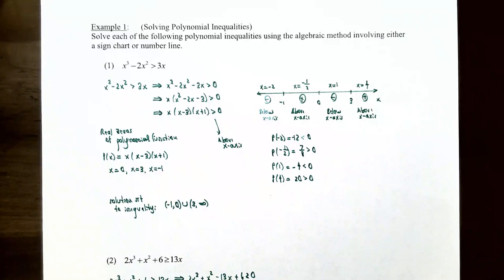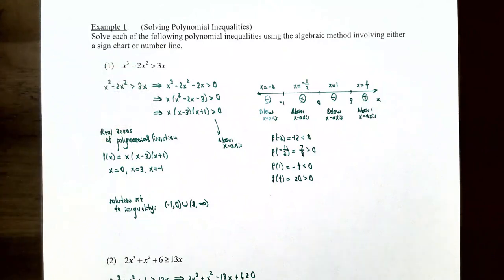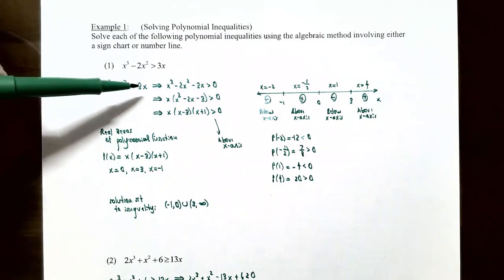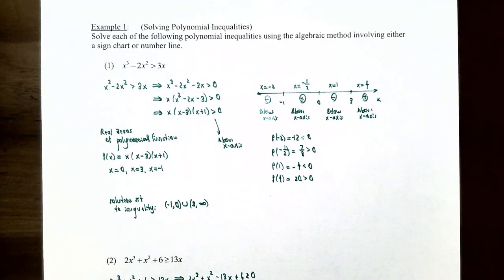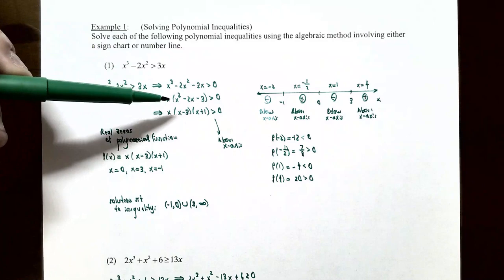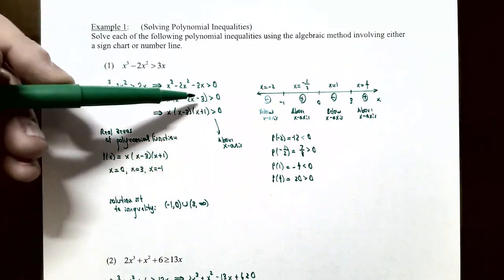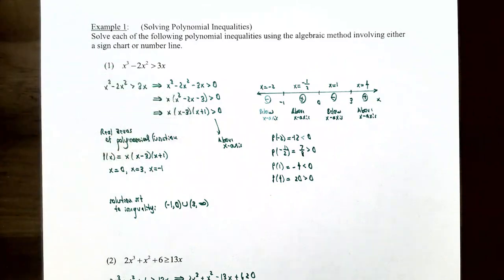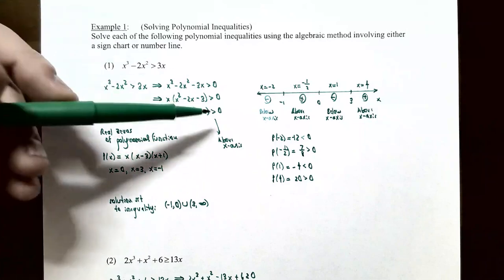Example 1: solving polynomial inequalities using the algebraic method involving a sign chart or number line. Number one: solve x³ − 2x² > 3x. Step one, subtract 3x from both sides so the right side is zero: x³ − 2x² − 3x > 0. Factor: all three terms share an x, so factor out x, leaving x² − 2x − 3. This trinomial factors further — two numbers that multiply to −3 and add to −2 are −3 and +1 — giving x(x−3)(x+1) > 0.